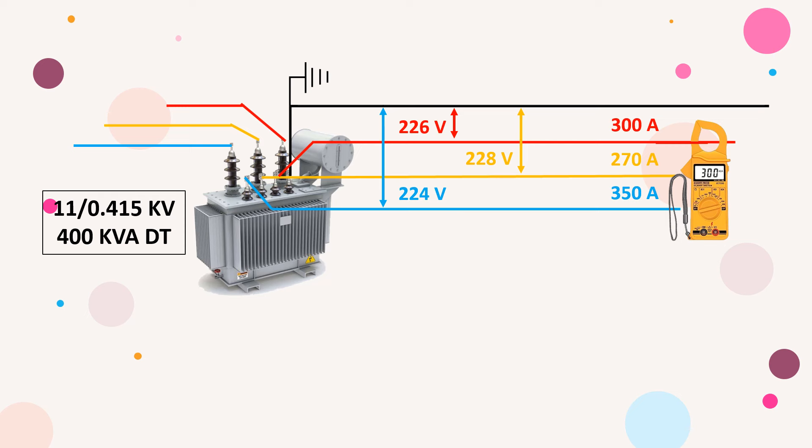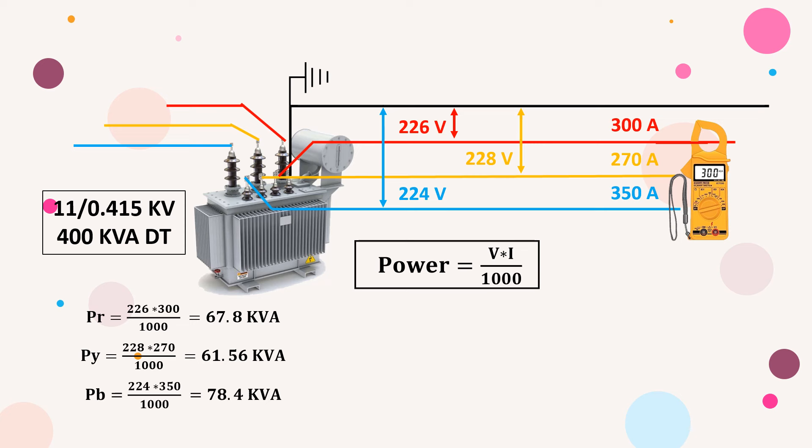That means active as well as reactive load. So just multiply voltage and current in each phase and divide by 1000. It will give you the total load connected on each phase in kVA.